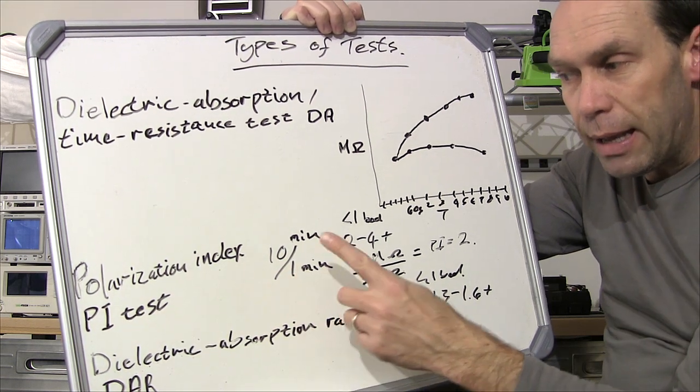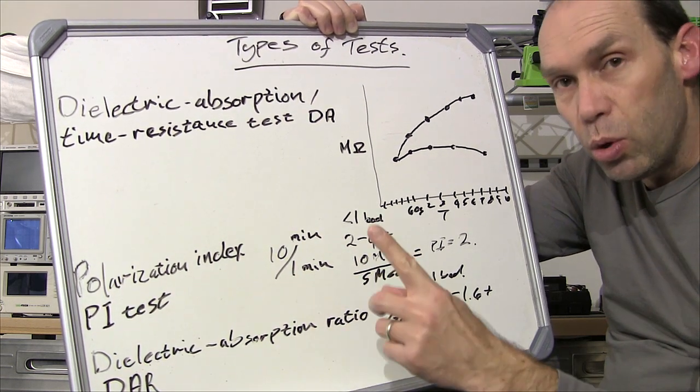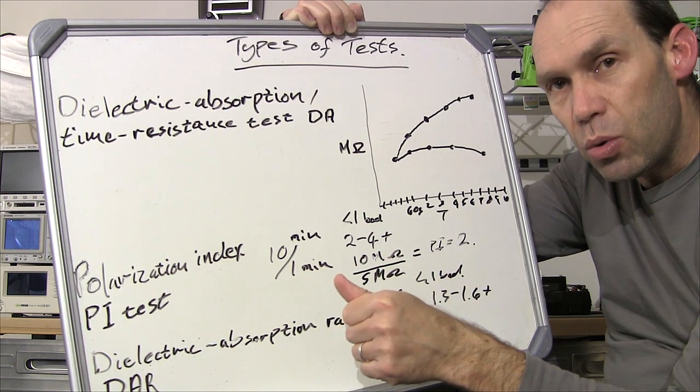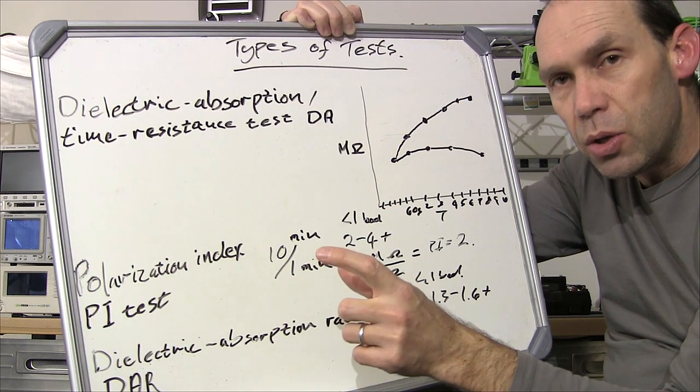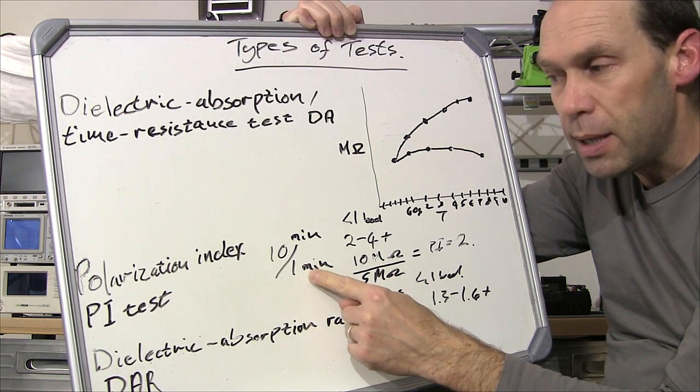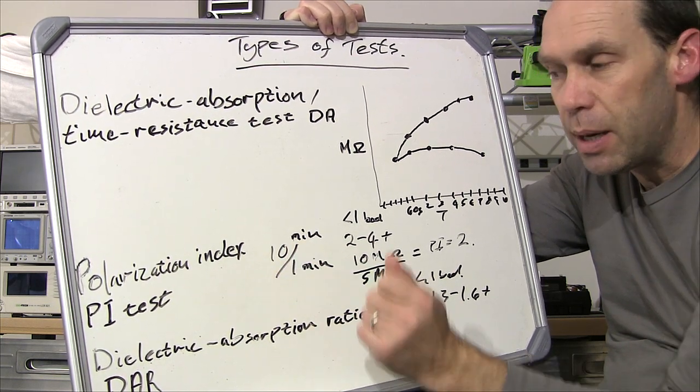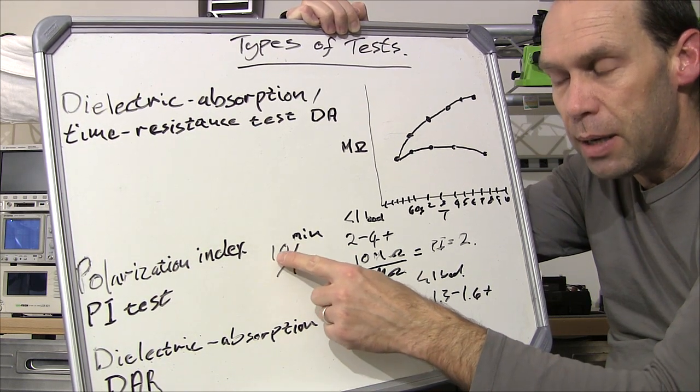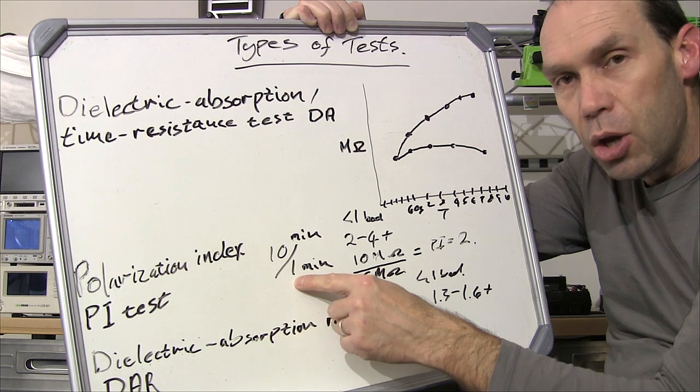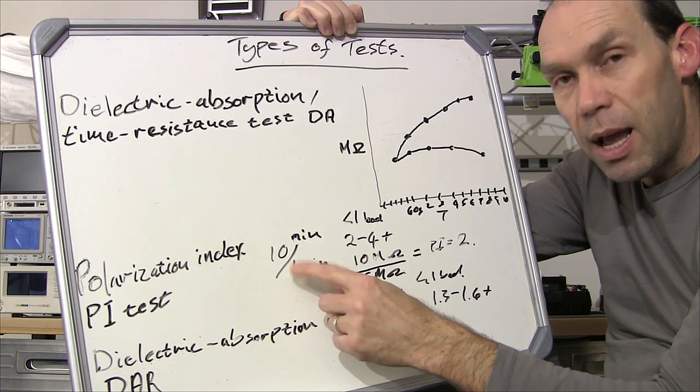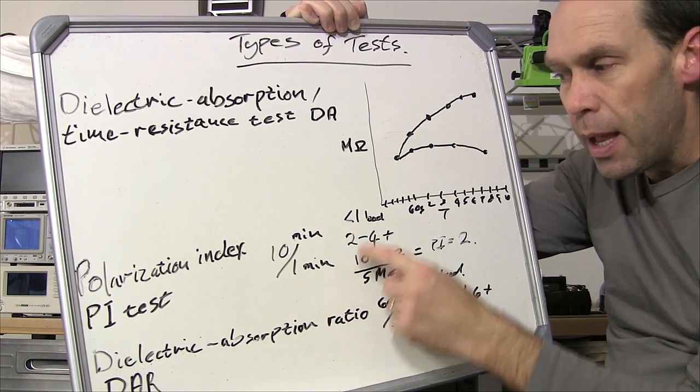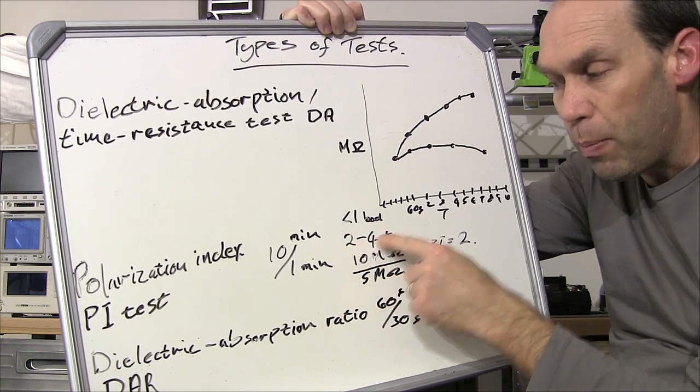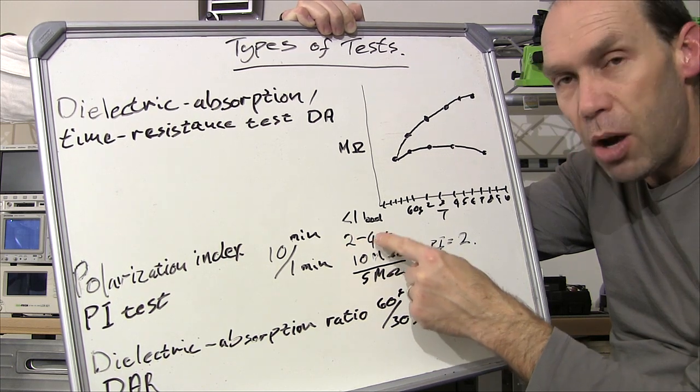So what you do there again it's a 10 minute test but all you do is you take after the first minute of holding down your tester with your predetermined voltage level you take reading at one minute and then at the end at 10 minutes. And what you do is you take your resistance measurement at 10 minutes and you divide it by your resistance reading at one minute and that will give you a ratio. Now anything less than one would be bad. If you're sitting in the two to four plus range you're kind of medium, over four it means you've got excellent, you're good.